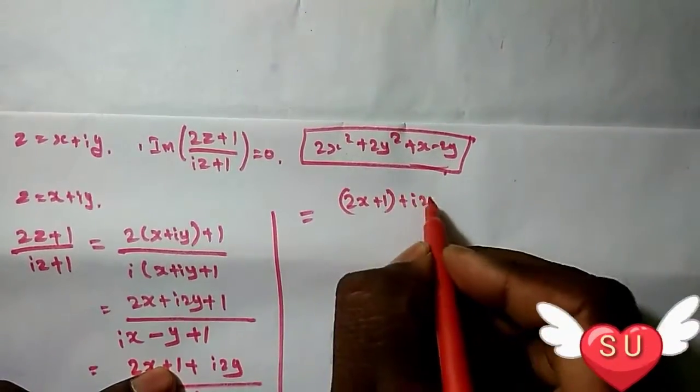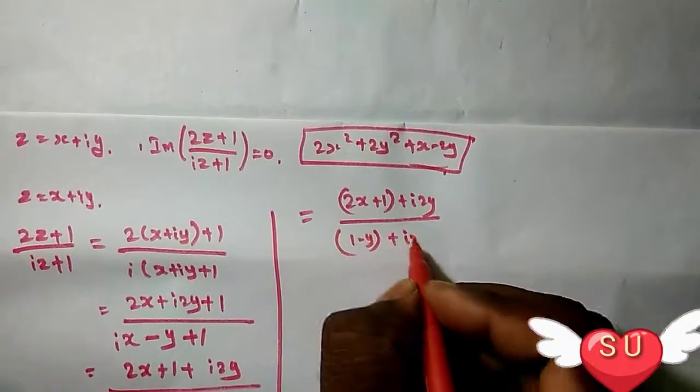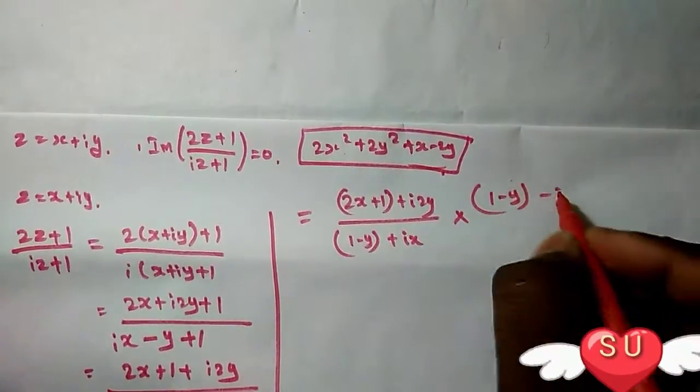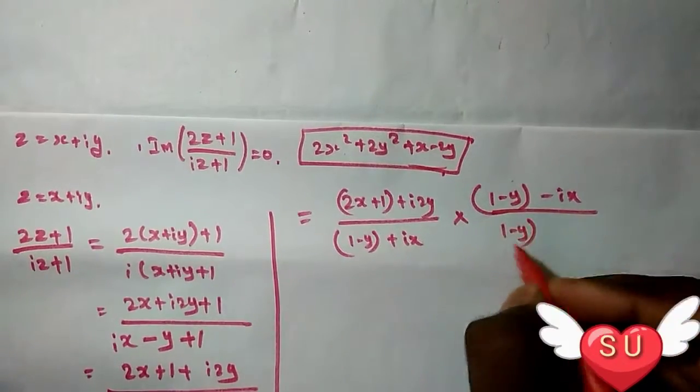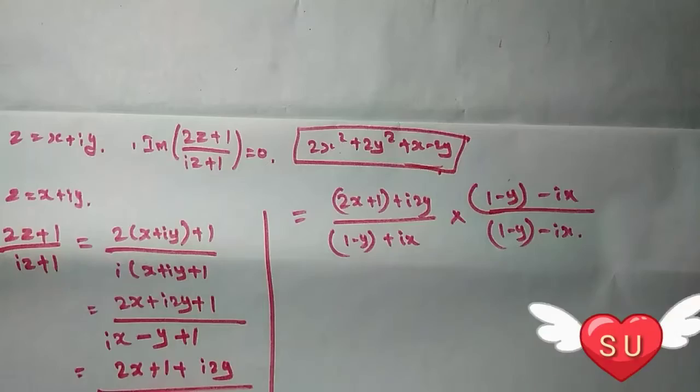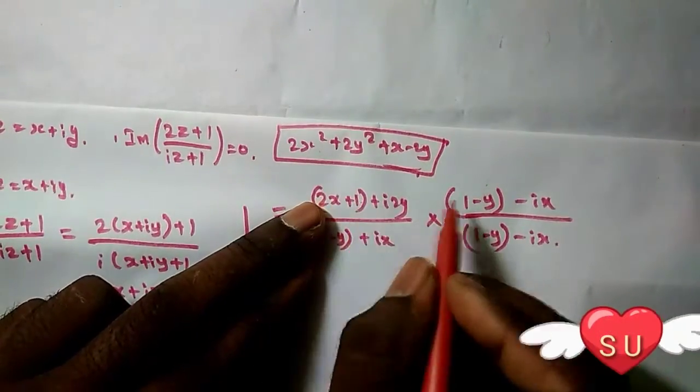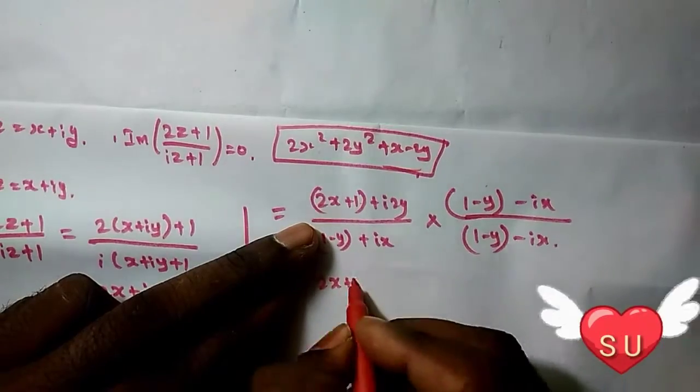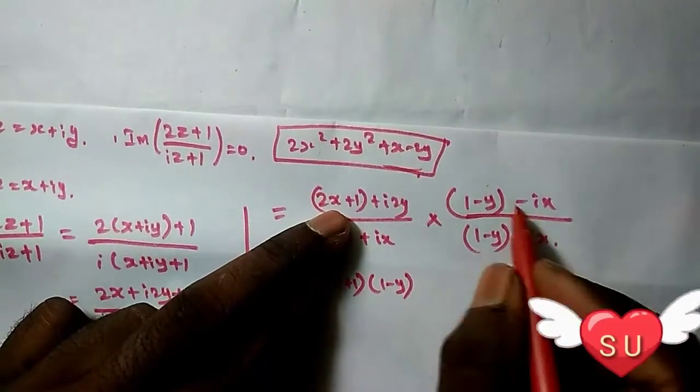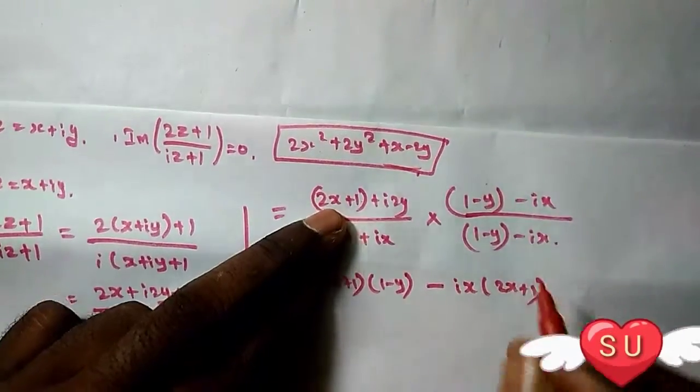Multiplying numerator and denominator by the conjugate (1-y-ix): [(2x+1+i·2y)/(1-y+ix)] × [(1-y-ix)/(1-y-ix)].